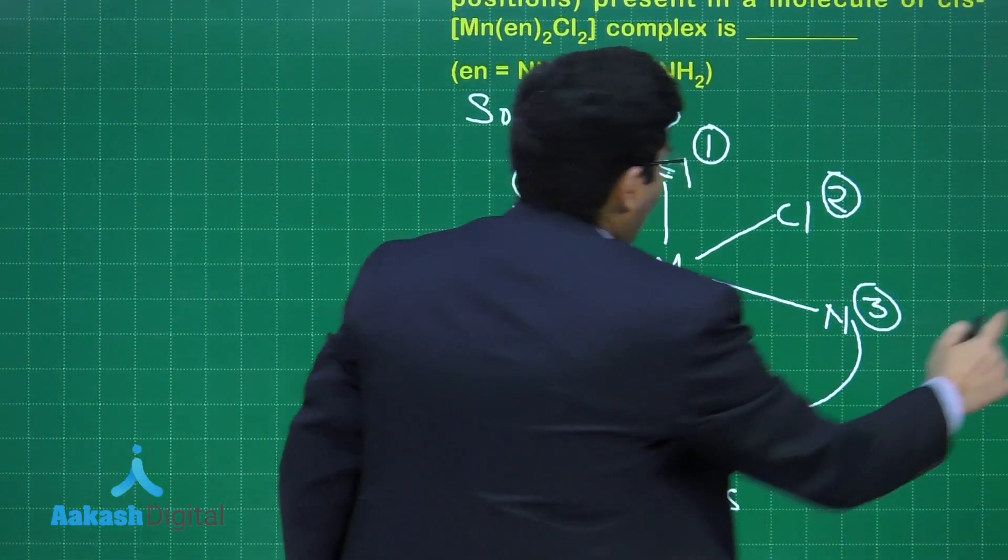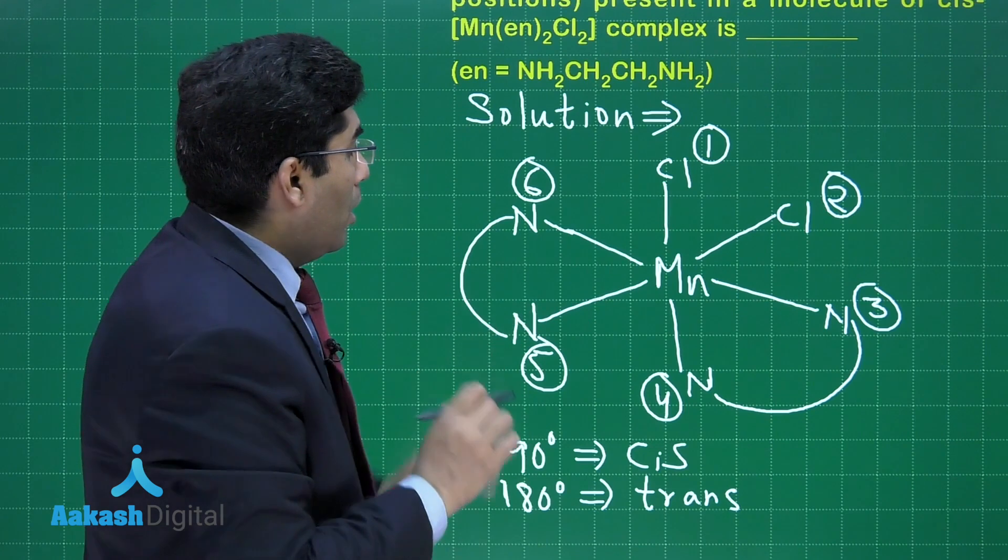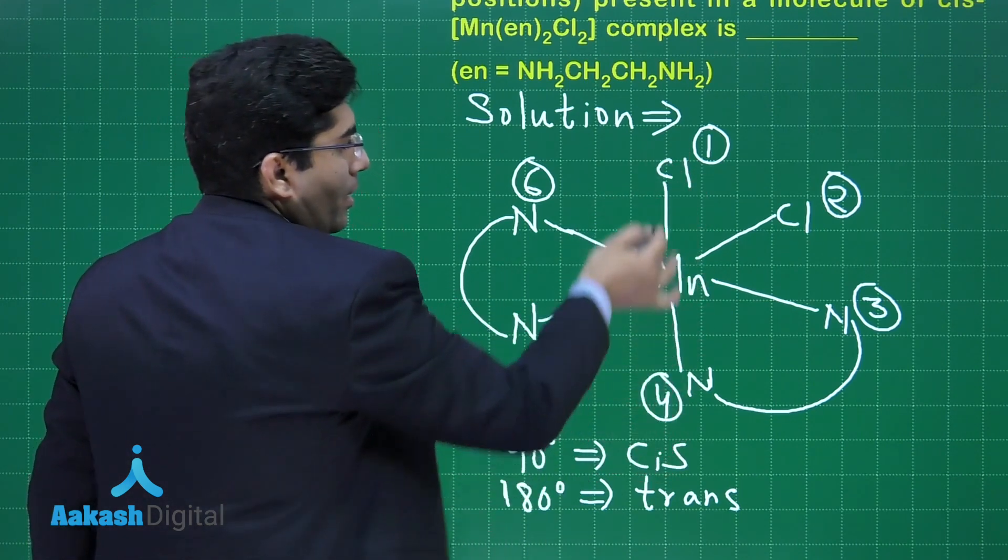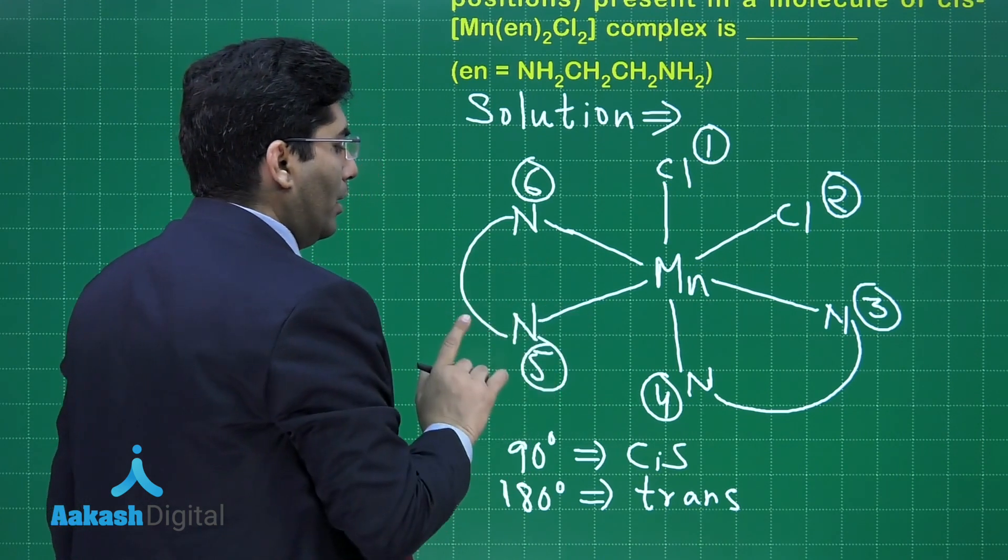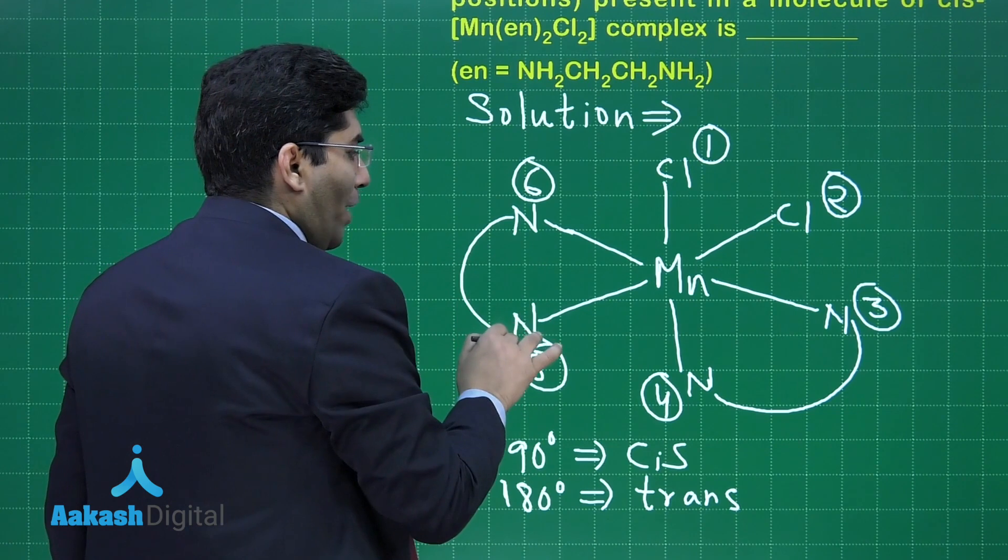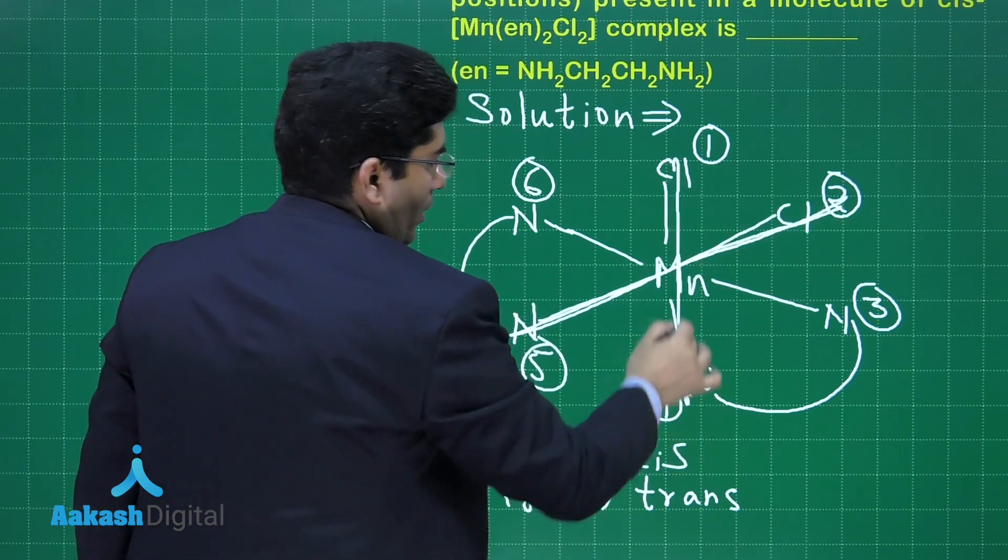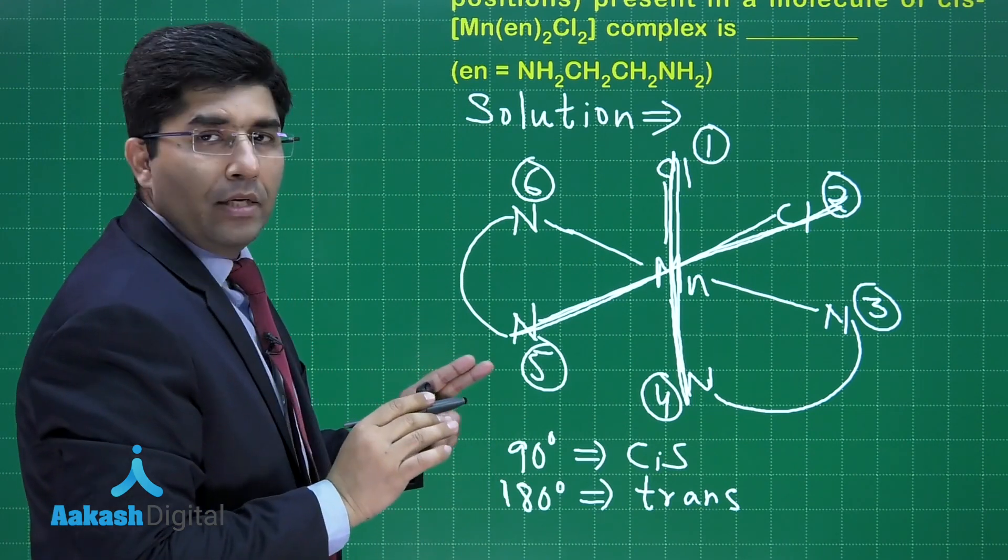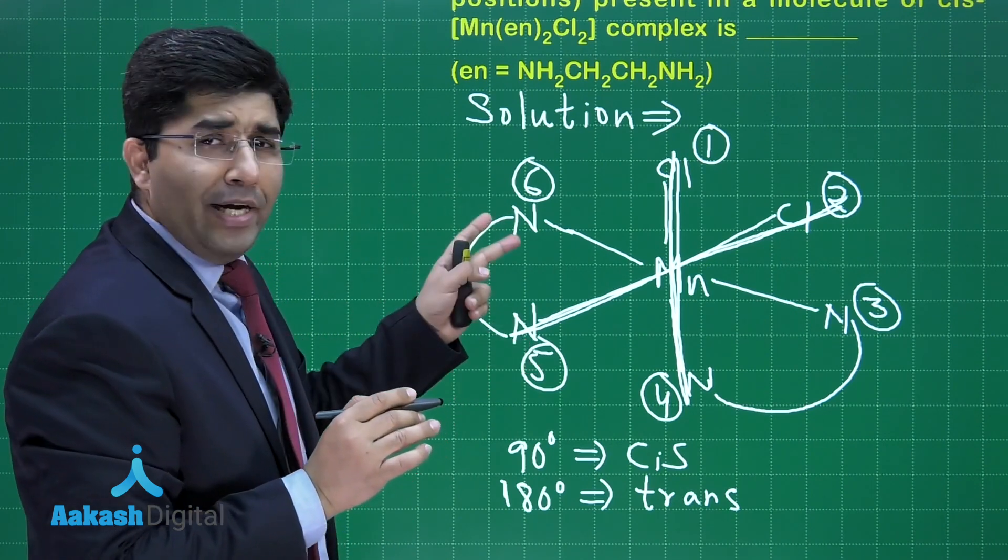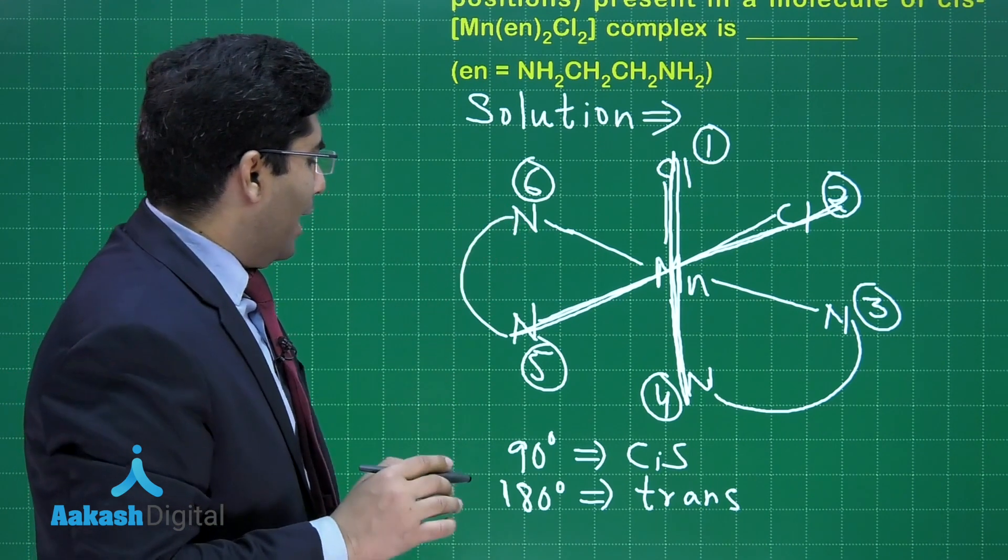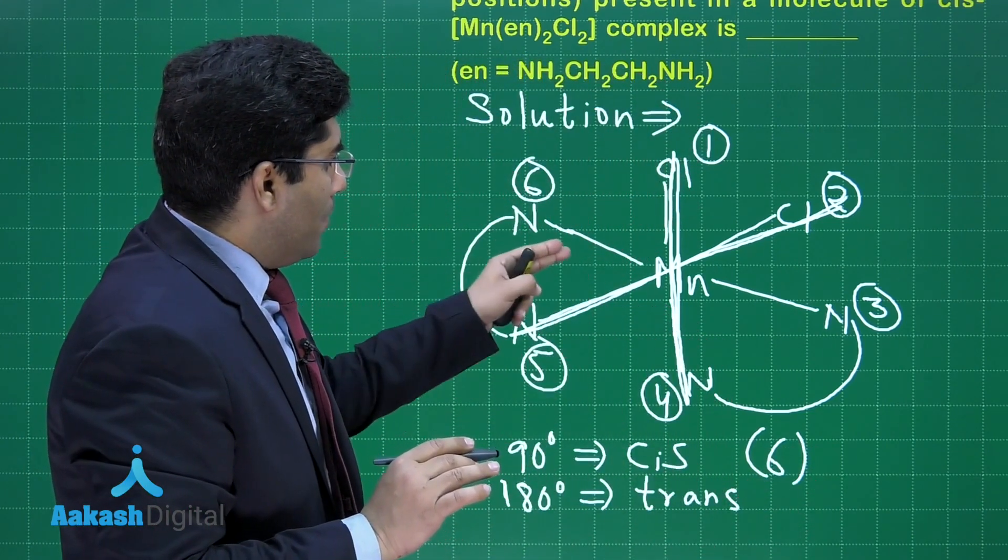So, there are 8 possible angles which will be having nitrogen, manganese, and chlorine. So, 1 and 4 means 1-Mn-4. This is 180 degrees, it is trans. And there is one more of this type, and that is 5-Mn-2. So, this angle and this angle, these two angles are of 180 degrees. So we had 8 angles. Out of those 8 angles, 2 are at 180 degrees, means they are at the trans position. It means that we will have 6 N-Mn-Cl angles.